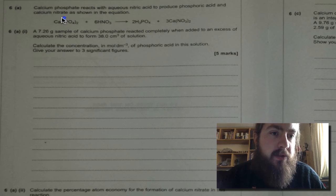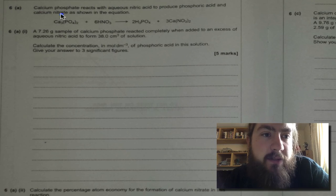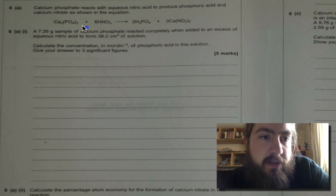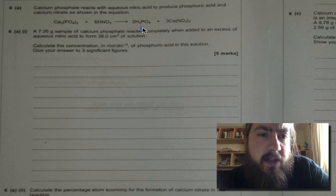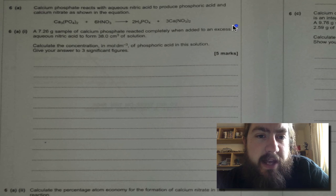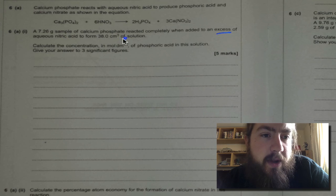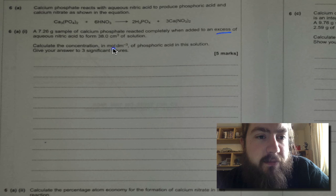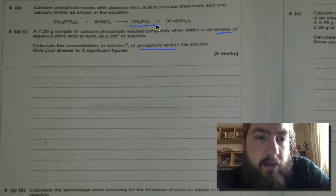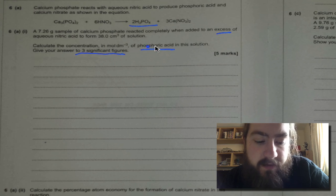Calcium phosphate reacts with aqueous nitric acid to produce phosphoric acid and calcium nitrate as shown in the equation. A 7.26 gram sample of calcium phosphate reacted completely when added to an excess of aqueous nitric acid to form 38 cm³ of solution. What you need to do is calculate the concentration in moles per liter of the phosphoric acid, which is one of the products in this solution, and make sure you give your answer to three significant figures.